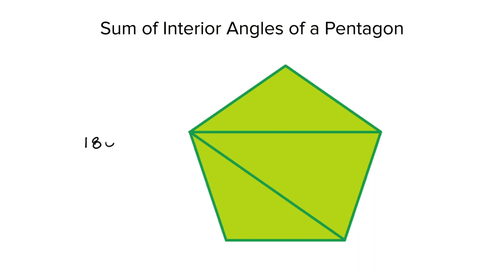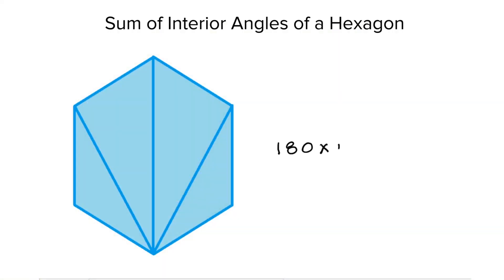Now, what is the sum of the interior angles of a pentagon? It is made up of three triangles. So, the sum is 180 times 3 equals 540 degrees. Similarly, hexagon is made up of 4 triangles. So, the sum of the interior angles of a hexagon is 180 times 4 equals 720 degrees.